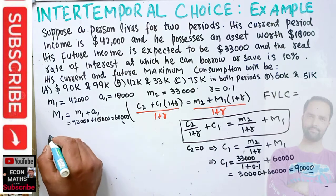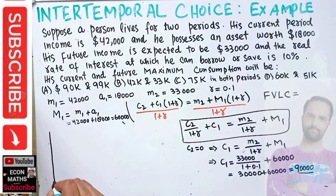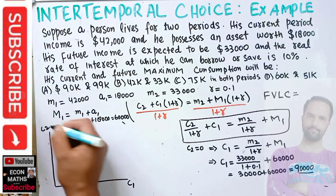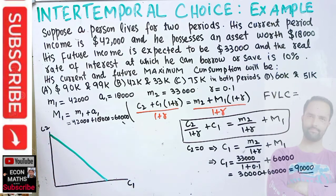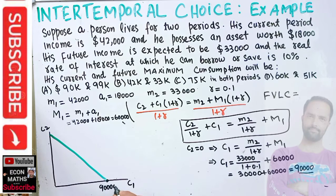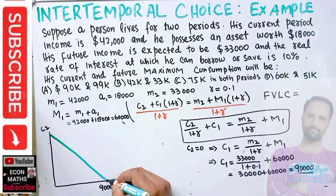Graphically, we put consumption in the current period on the horizontal axis and consumption in the future period on the vertical axis, and draw the budget constraint. The horizontal intercept equals M2/(1+r) + M1, which is 90,000, meaning he consumes everything in the first period.